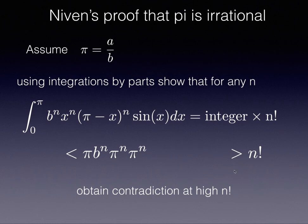Meaning that, obviously, at some point, n factorial, if you go to large n, is going to be bigger than this. So we are getting a contradiction.